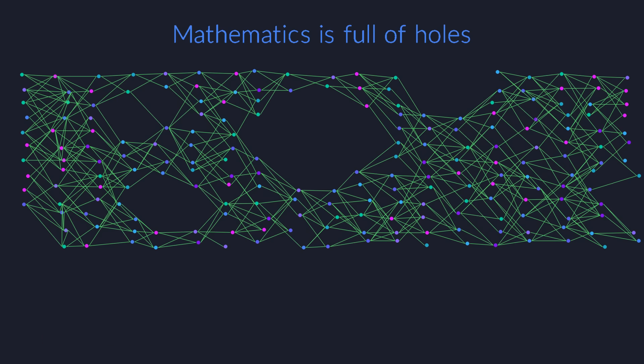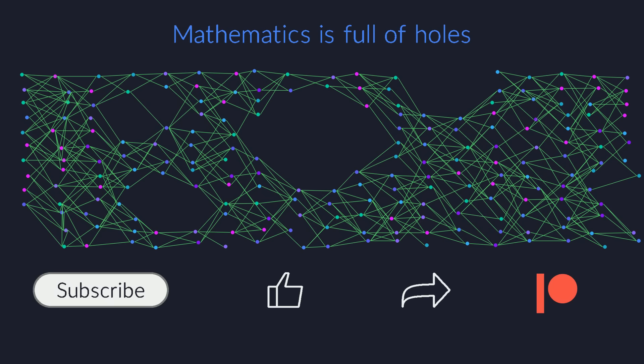The main point to take away from this video is that we accept incompleteness, but we would never accept a lack of soundness. Too bad that there are semantically true statements that we will never be able to prove. At least we know that whenever we do manage to prove something, it will always be semantically true.